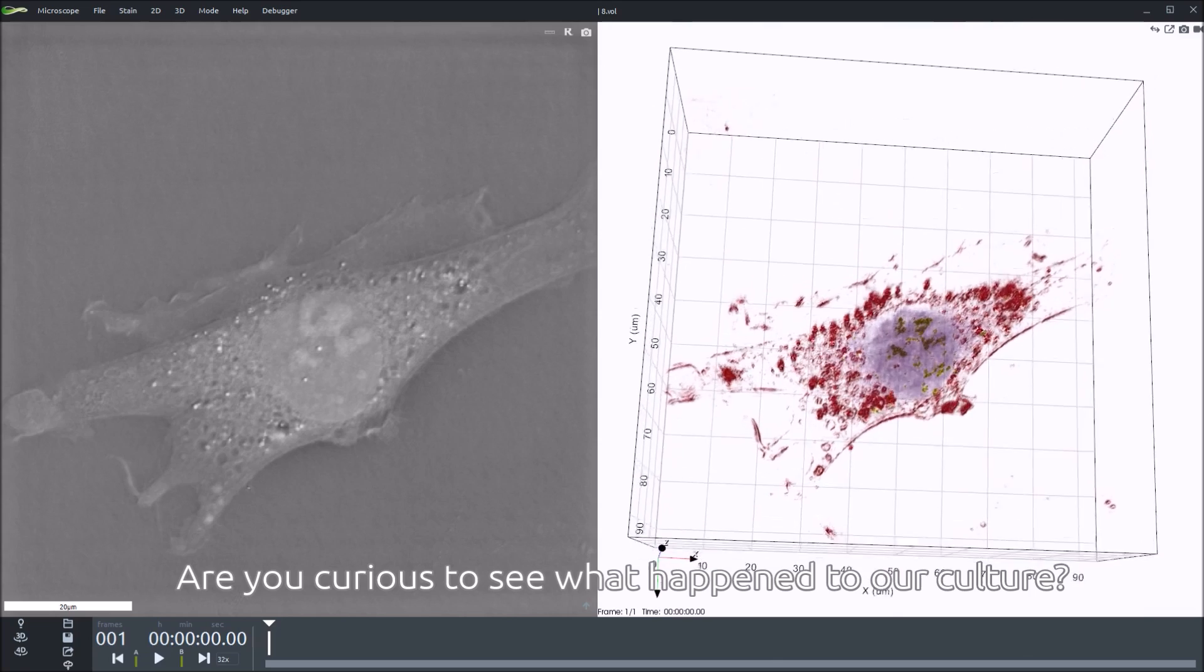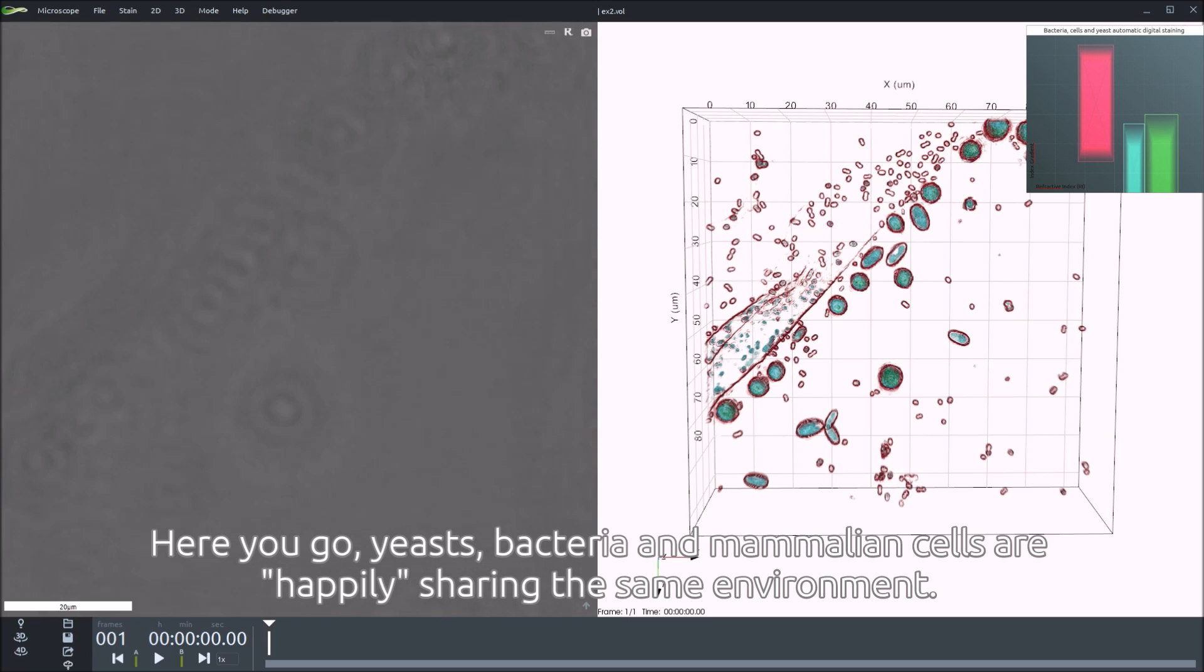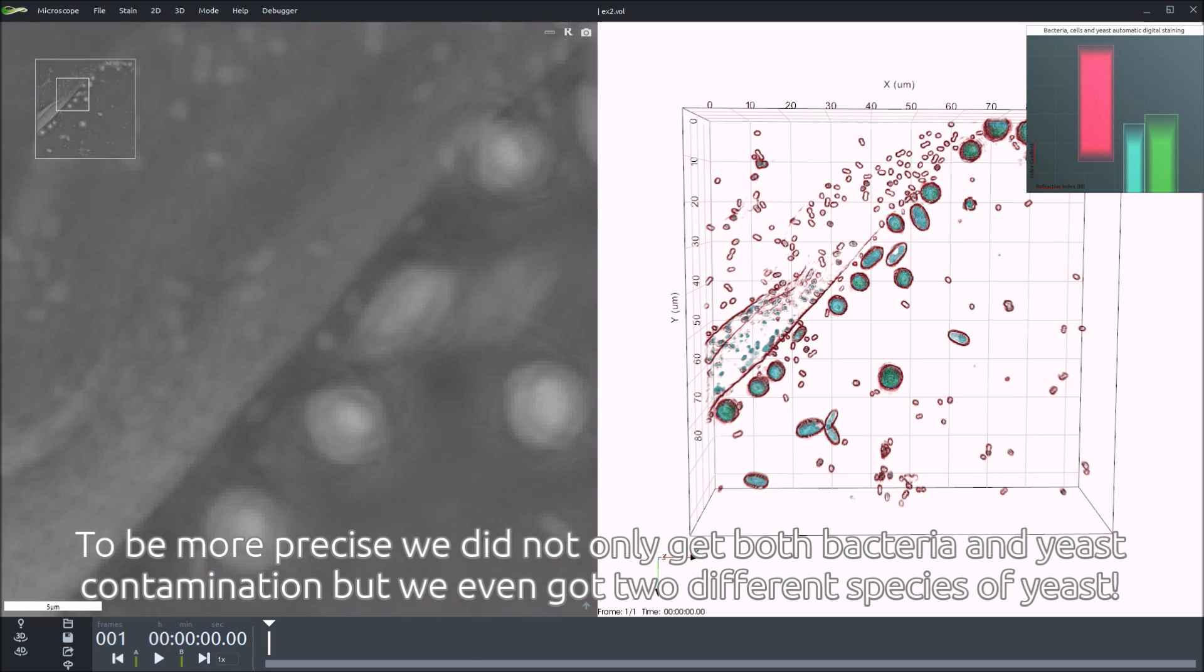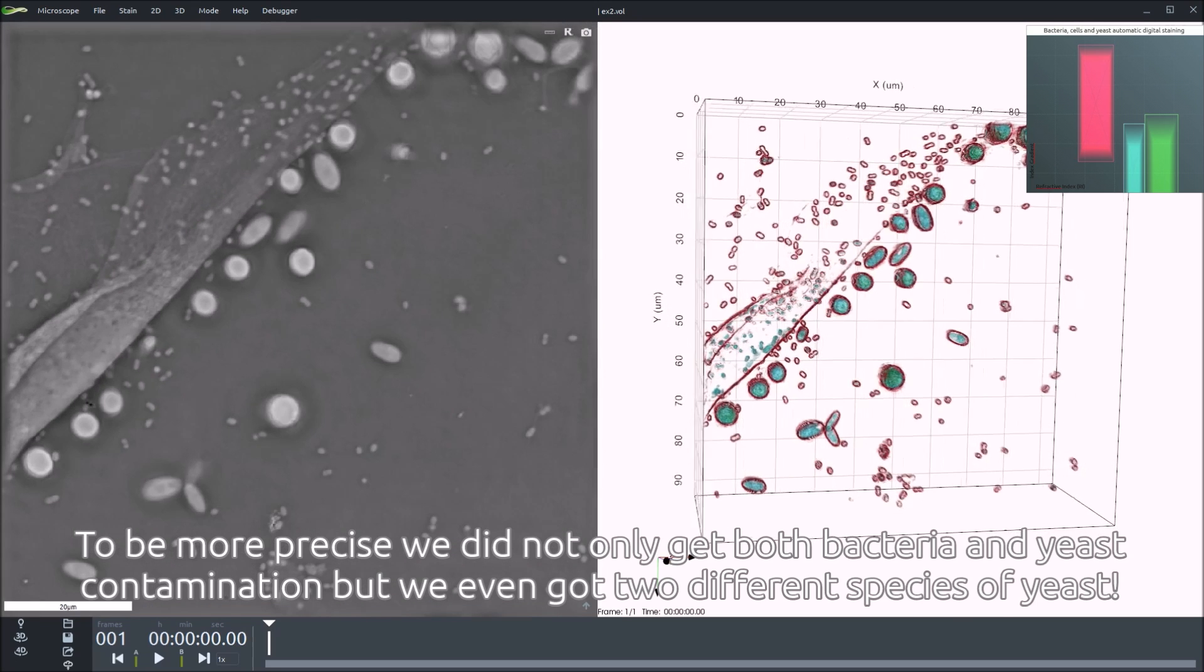Are you curious to see what's happened to our culture? Here you go, yeast, bacteria, and mammalian cells are happily sharing the same environment. To be more precise, we did not only get both bacteria and yeast contamination, but we even got two different species of yeast.